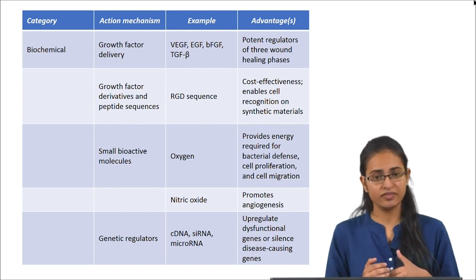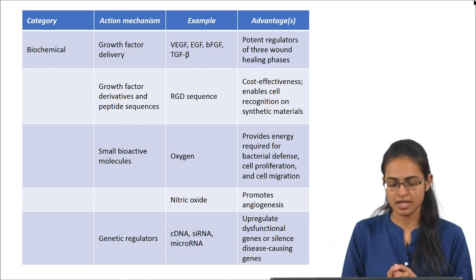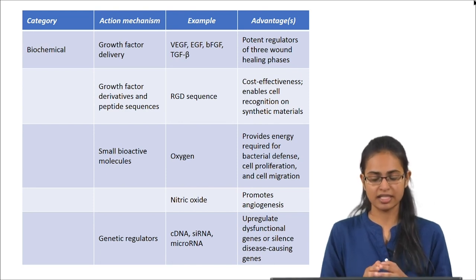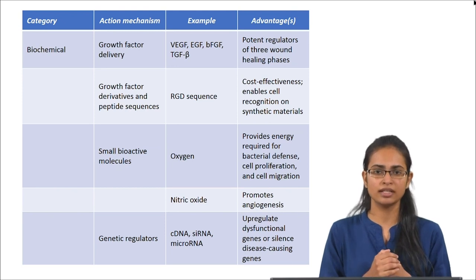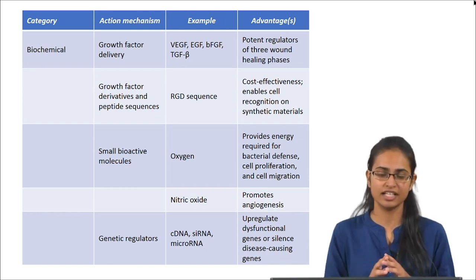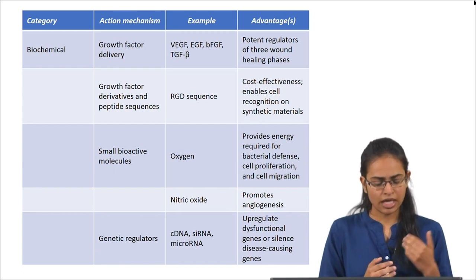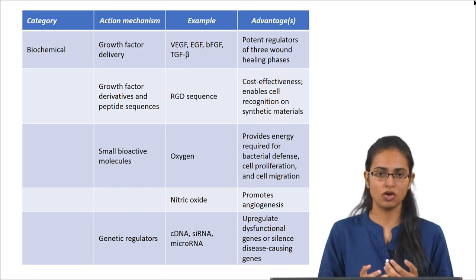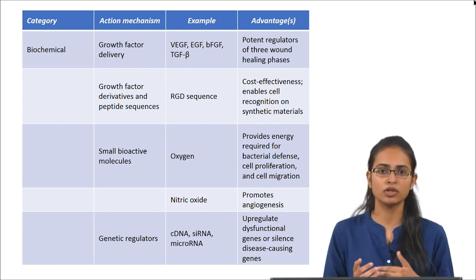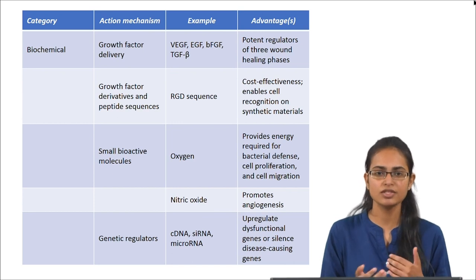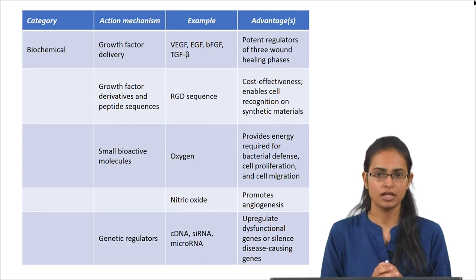Other than growth factors, there are peptide sequences such as the RGD sequence — consisting of arginine, glycine, and aspartic acid — which is found in several ECM proteins. RGD can be incorporated into synthetic materials that usually lack cell adhesion sites, helping in cellular adhesion and migration into the graft. Small bioactive molecules can also be incorporated; for example, oxygen levels are found to be low in chronic wound tissues. Oxygen is important for bacterial defense, cell proliferation, and cell migration.